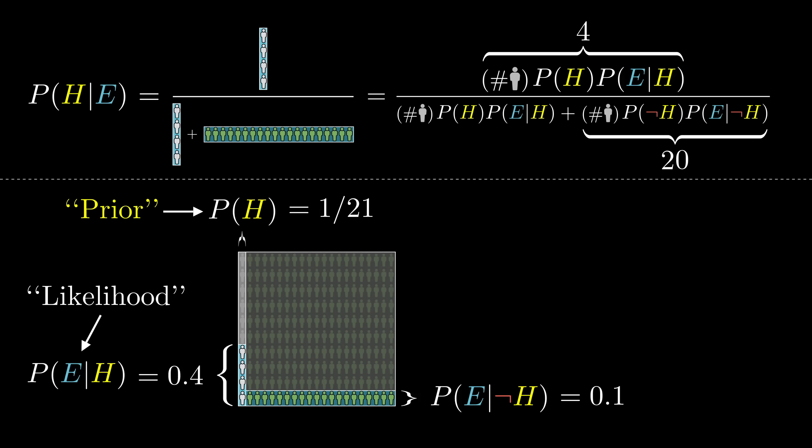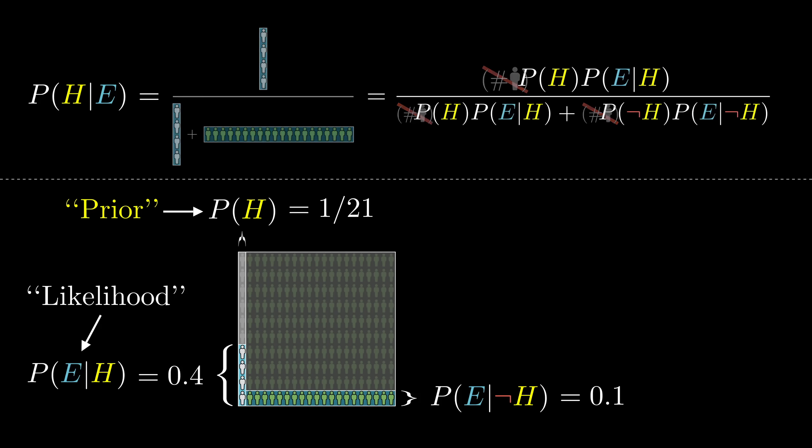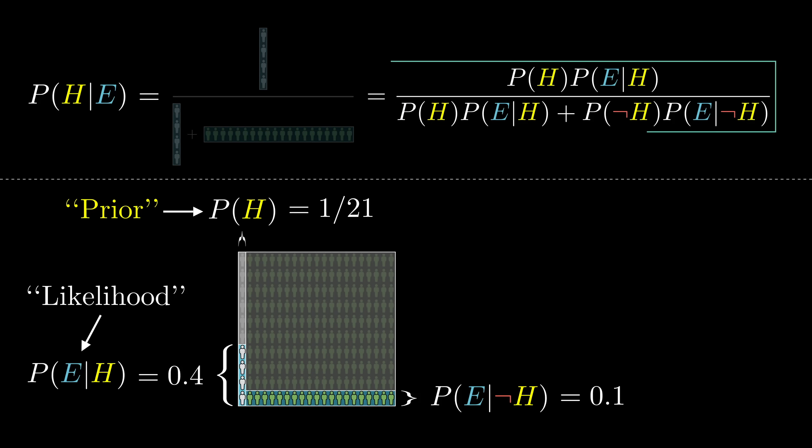Now notice the total number of people here, 210, that gets cancelled out. And of course it should, that was just an arbitrary choice made for the sake of illustration. This leaves us finally with a more abstract representation, purely in terms of probabilities. And this, my friends, is Bayes' theorem.